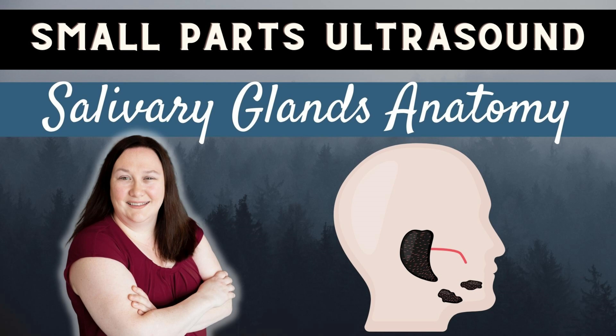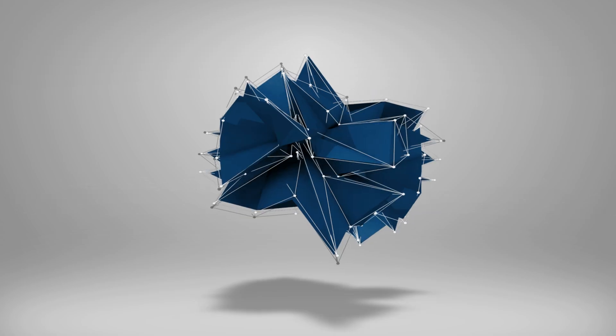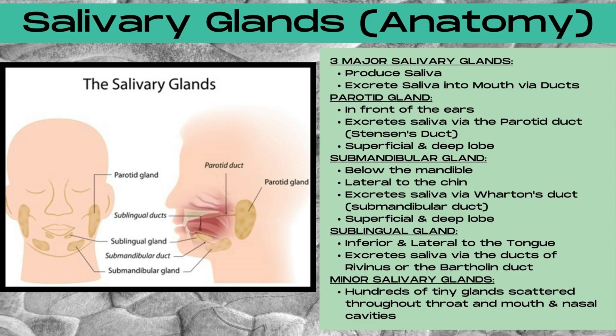Let's ultrasound! On today's edition of Small Parts Ultrasound, let's talk salivary glands anatomy. There are three major salivary glands and they produce saliva and excrete it into the mouth via ducts.